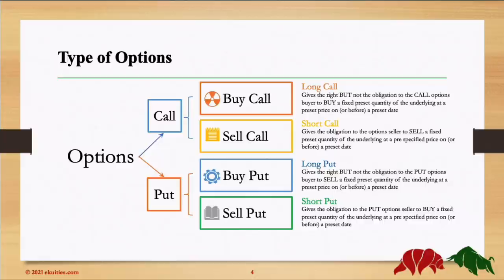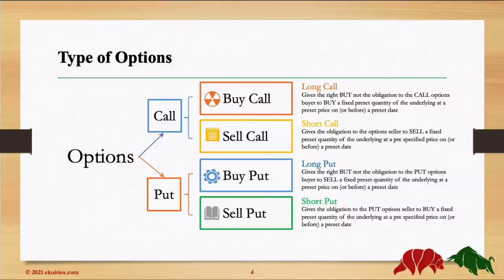We have seen this slide before. There are four combinations you could do with Options. You could buy a Call, which gives you the right but not the obligation to buy a fixed predefined quantity of the underlying at a predefined price on or before a predefined date. If you buy a Put, it's the same but you have the right to sell. If you sell a Call, you're obliged to sell the underlying. And if you sell a Put, you're obliged to buy the underlying. Options Contracts are traded on Exchanges, hence they are standardized.